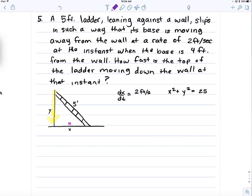A 5 foot ladder leaning against a wall slips in such a way that its base is moving away from the wall at a rate of 2 feet per second. Anytime you see that rate, that's when you know you're working with a derivative. At the instant when the base is 4 feet from the wall, how fast is the top of the ladder moving down the wall at that instant? Now keep in mind, this image is not provided or this information.